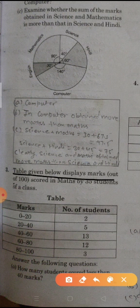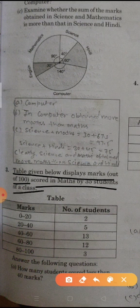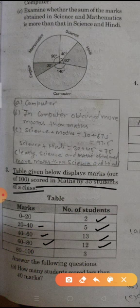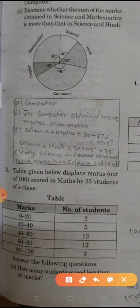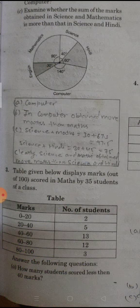Q3: table given below displays marks out of 100 scored in Math by 35 students of class. 0 to 20 marks: 2 students, 22 to 40 marks: 5 students, 42 to 60 marks: 13 students, 62 to 80 marks: 12 students, and 80 to 100 marks: 3 students. First is, how many students score less than 40 marks? Less than 40 means 2 plus 5 is 7 students.